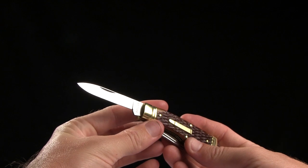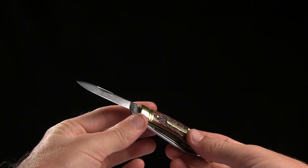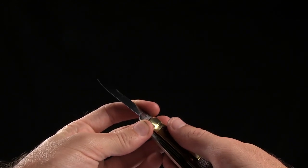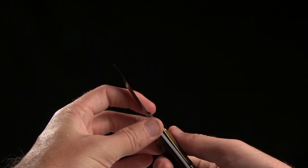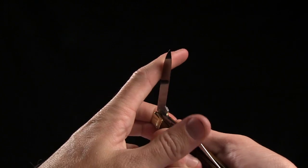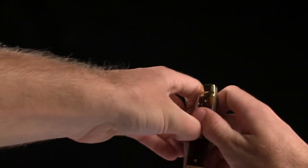And then on your secondary blade you've got a smaller, slightly more functional blade. Well, not more functional, but just smaller and able to get into the little things.